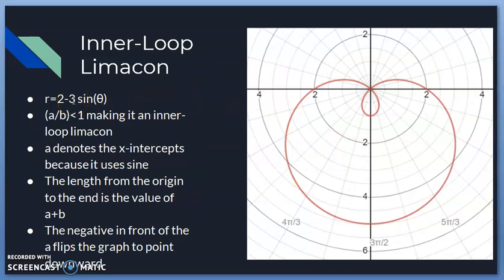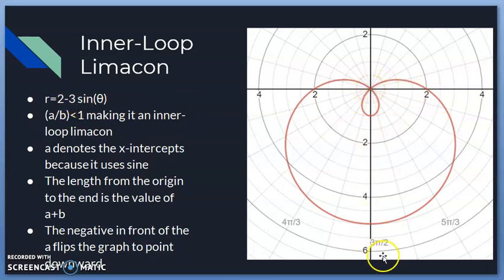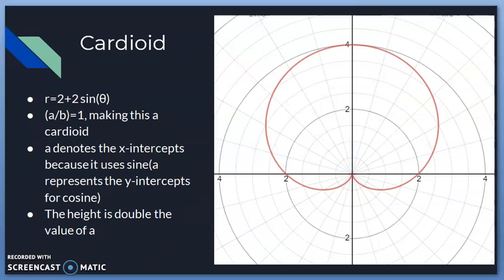For r = 2 − 3·sinθ: 2/3 < 1, which again creates an inner loop. Since it uses sine, a denotes the x-intercepts, and it's symmetrical to the y-axis. The length from the origin to the far end is a + b = 5. The negative in front of b flips it downward — normally the loop would go upward.